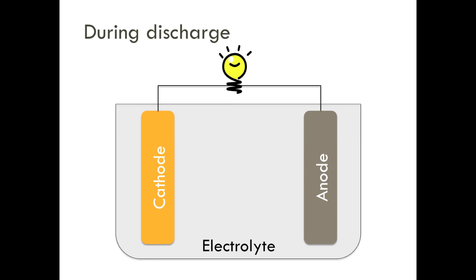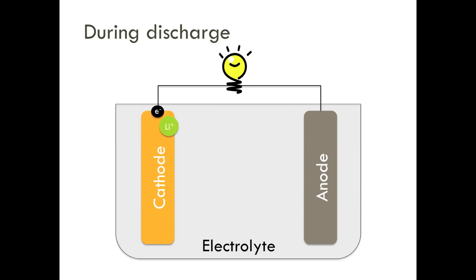During discharge, the opposite happens. Lithium from the anode moves through the electrolyte as lithium-plus ions while an electron moves through the external circuit and performs electrical work.